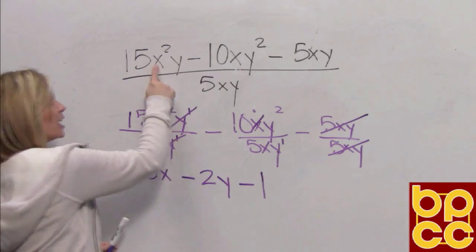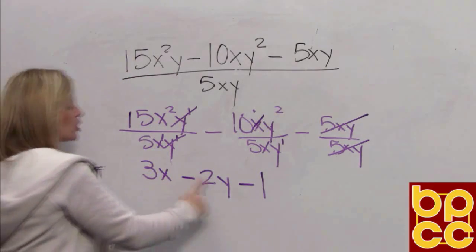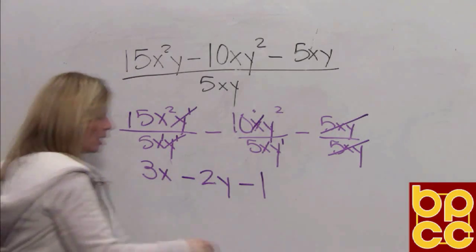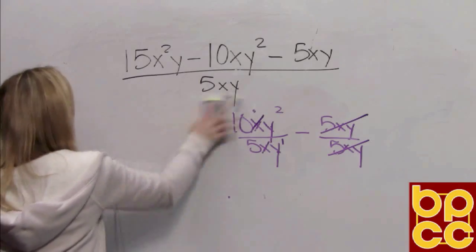But we have to write the one when it's connected by either subtract or add. Think of it this way. If you start with three terms and you divide, you should end with three terms. Okay, let's look at one more example in our notes.